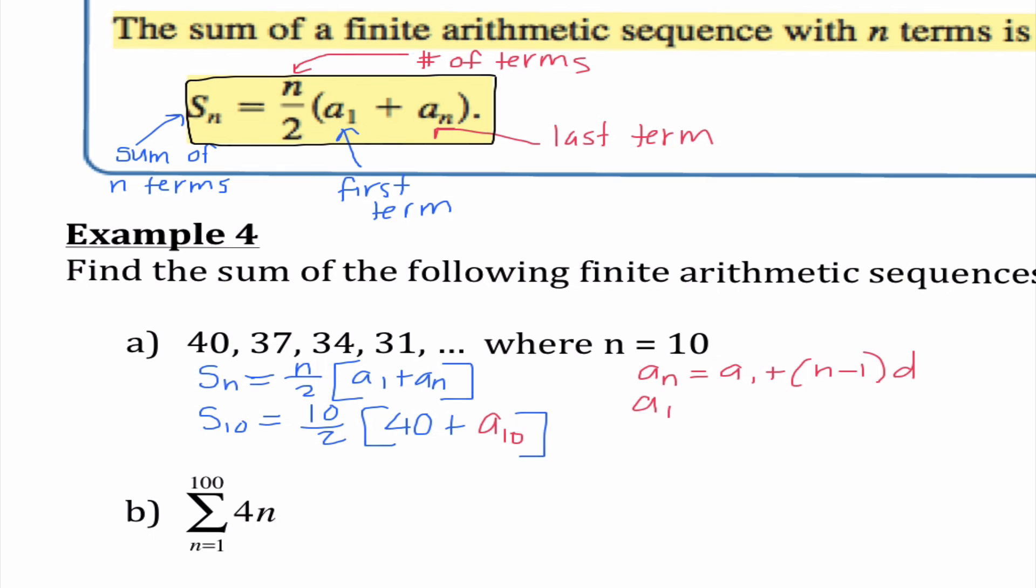The good news is we have learned another equation. a sub n equals a sub 1 plus n minus 1 times d. So a sub 10 equals 40 plus 10 minus 1. Our common difference here, 37 minus 40 would be negative 3. It makes sense because we see this sequence is decreasing. In my calculator, I'm going to do 40 plus 9 times negative 3 is negative 27. So the 10th term is actually 13. I'm replacing a sub 10 with 13. The sum after 10 terms is 5 times 53, which is 265.